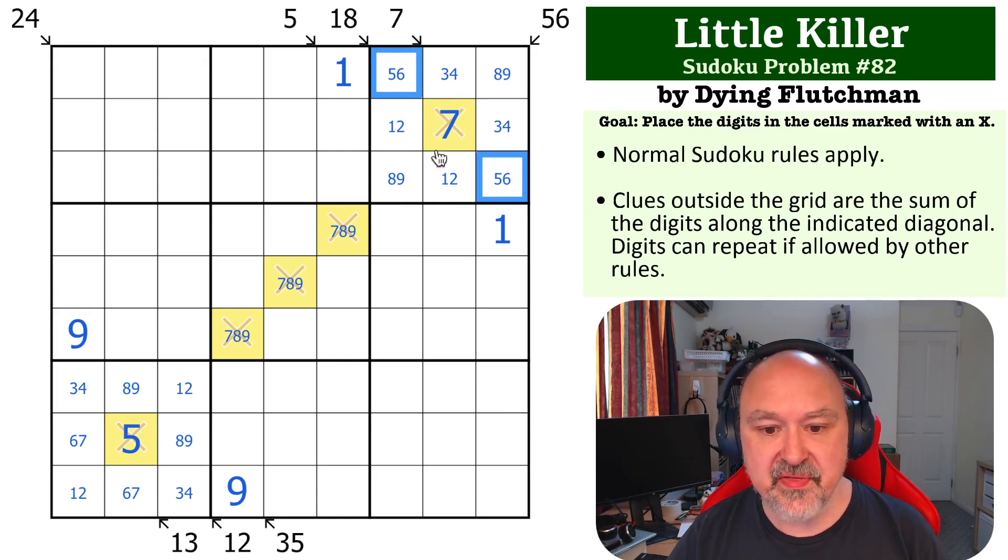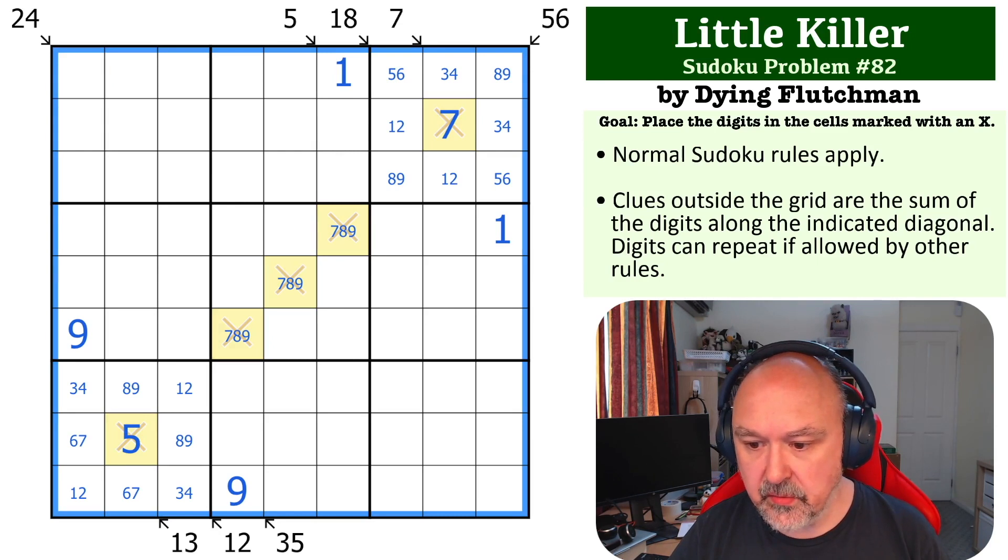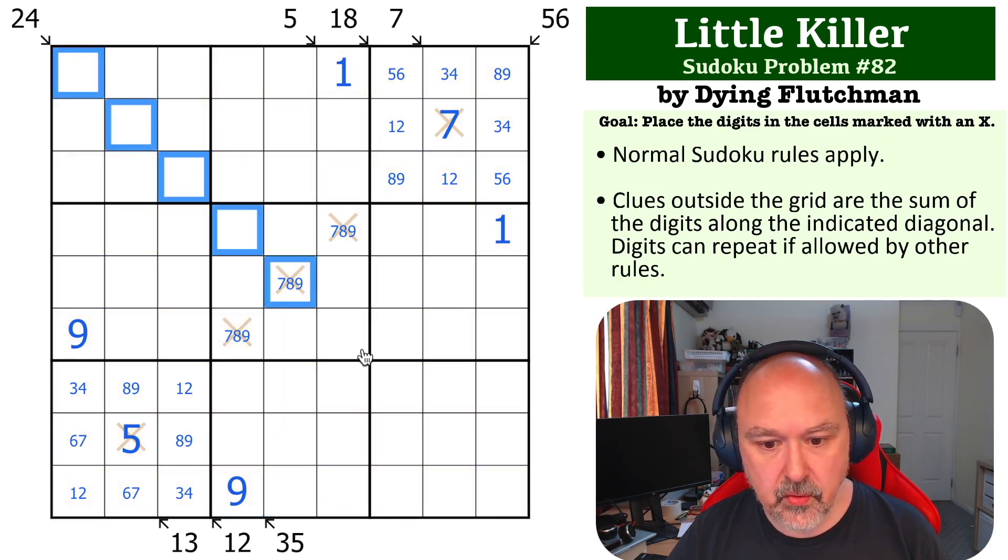And that gets us those digits, and these must be 7, 8, and 9. Okay, so how do we get these digits? This 24 - I'm going to unhighlight the yellow.